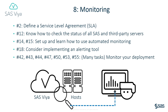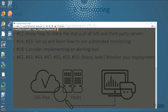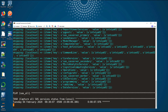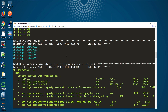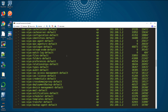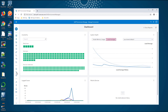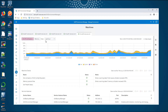Number 8: Monitoring. For enterprise-scale deployments, Task 2 is to define a Service Level Agreement, an SLA, which states the measures you will use for service level monitoring and reporting and how they will be calculated. Task 12: know how to check the status of all your SAS Viya services ad hoc at any time. Tasks 14 and 15 suggest setting up automated monitoring to regularly check the status of your SAS Viya services as well as key metrics for the hosts on which they run, like disk space, memory, and network use. Also, consider implementing an alerting tool.